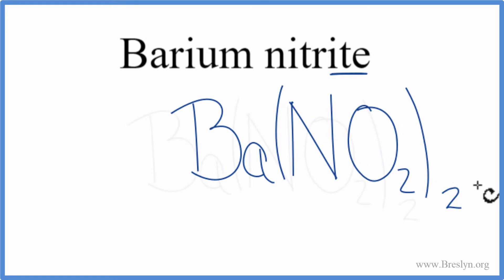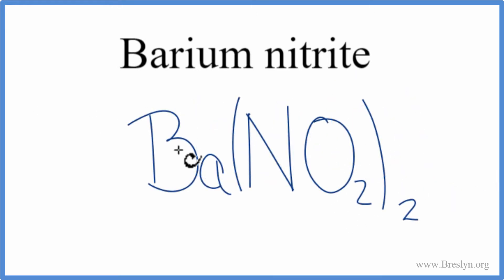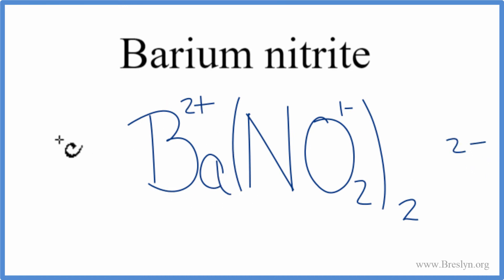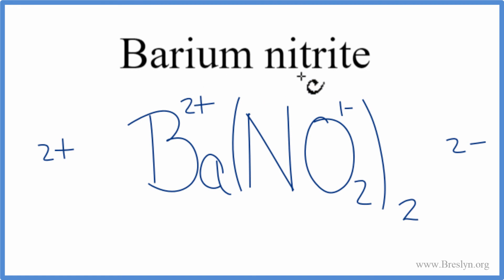Let's check our work. Barium is 2-plus, and the nitrite ion is 1-minus. We have two nitrite ions, each 1-minus, so 2 times 1-minus is 2-minus. One barium is 2-plus. 2-plus and 2-minus gives us a net charge of 0. This is the correct formula for barium nitrite.